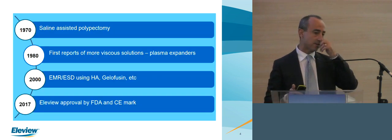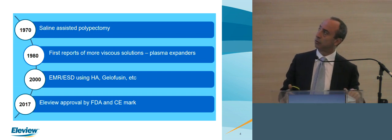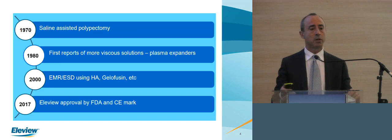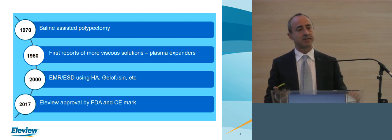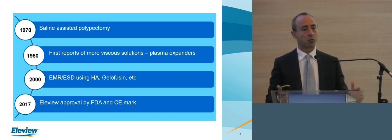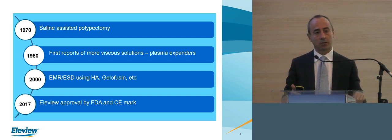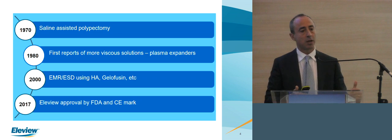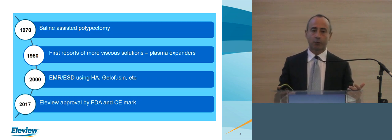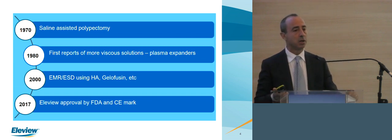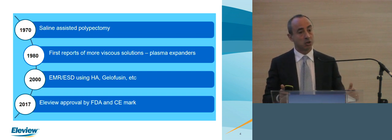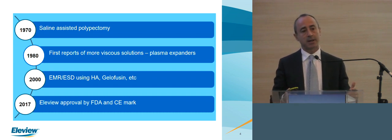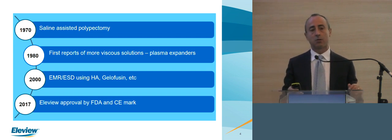If you look there, in the last 40 years, we had a sort of big change in the game of submucosal injection. We started with polyp resection — saline-assisted polypectomy — and we moved to a little bit more viscous because we realized that we need a substance that was staying longer than saline in the submucosa. At the beginning of 2000, we had the explosion of EMR and ESD from the Japanese masters. We started using hyaluronic acid, and afterwards we moved to a cheaper solution because hyaluronic acid wasn't available in Europe and was extremely expensive. And now in 2017, we got this new solution approved by FDA and also with the CE mark.